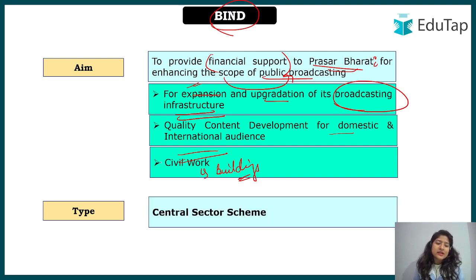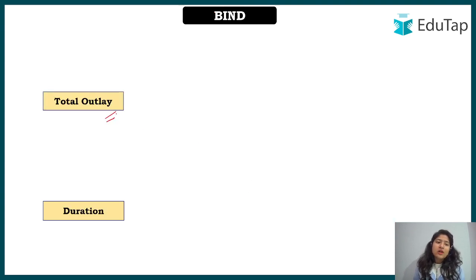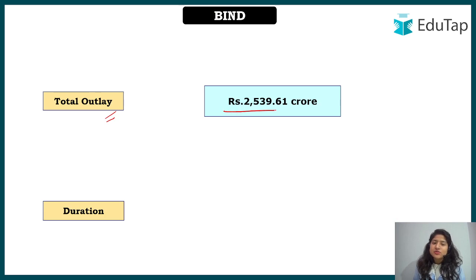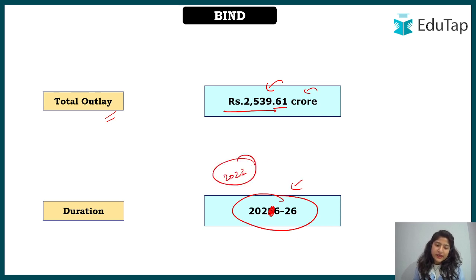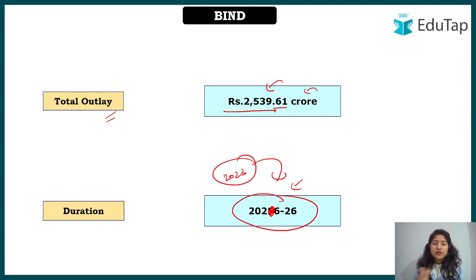The type of scheme is a Central Sector Scheme, meaning it is 100 percent funded by the central government. The total outlay that has been allocated is Rs. 2,539.61 crore for the period up to 2025-26. The scheme was launched in 2023, covering approximately two financial years.